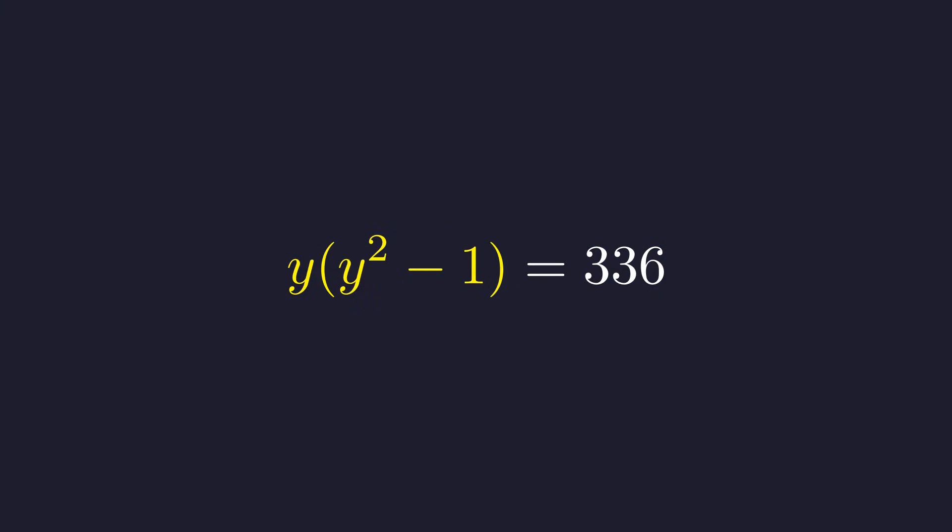Now we can distribute the y into the parentheses. This simplifies to the cubic equation y cubed minus y equals 336. This is a huge improvement over the messy cubic we got from the brute force method.